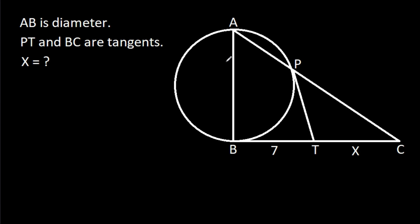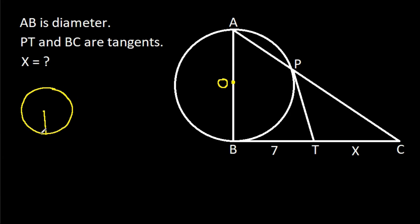We know that AB is the diameter, so the center of the circle, let's call it O, will be on AB. We also know that in any circle, the radius and tangent are perpendicular to each other, so this angle will be 90 degrees.